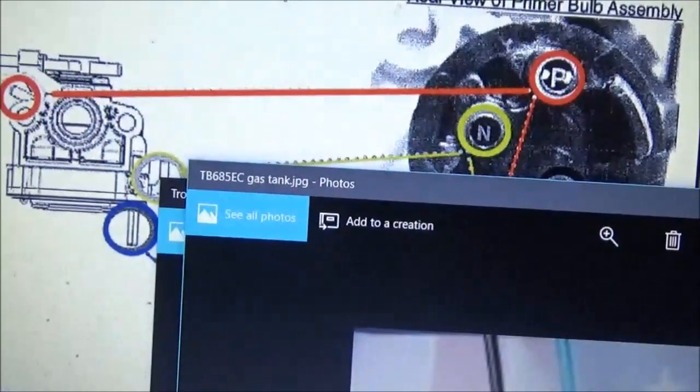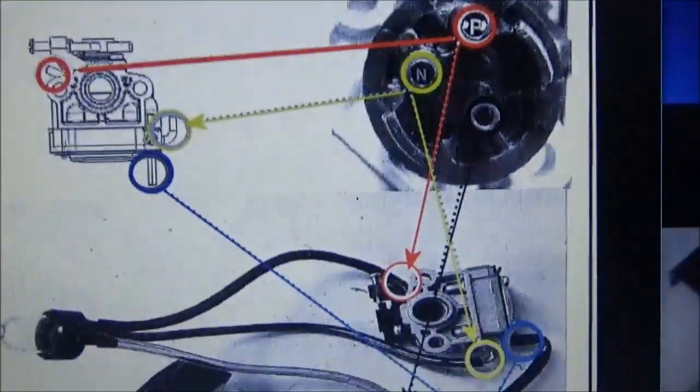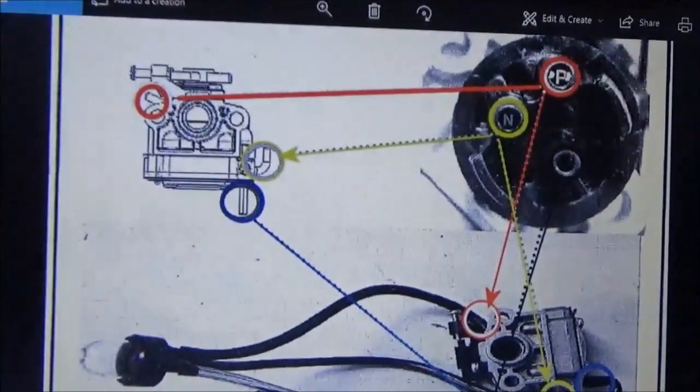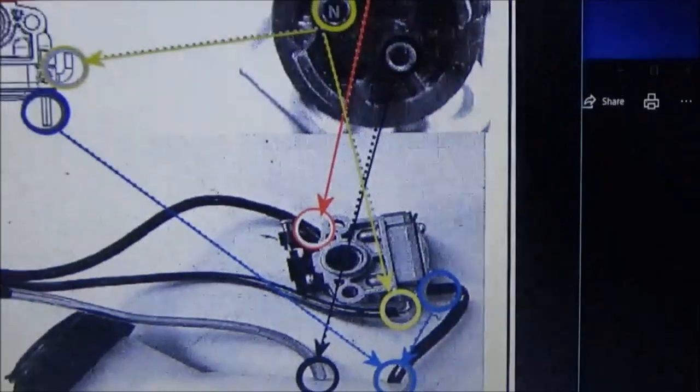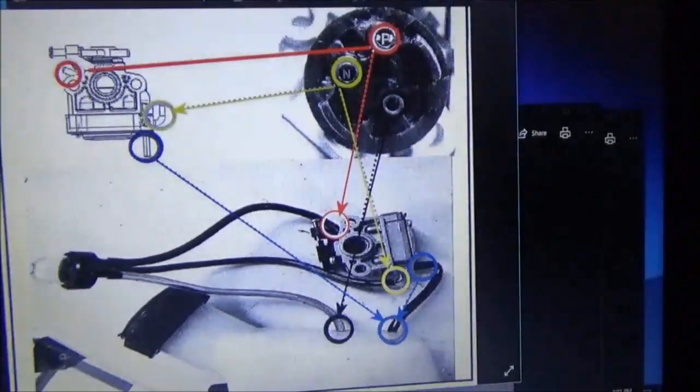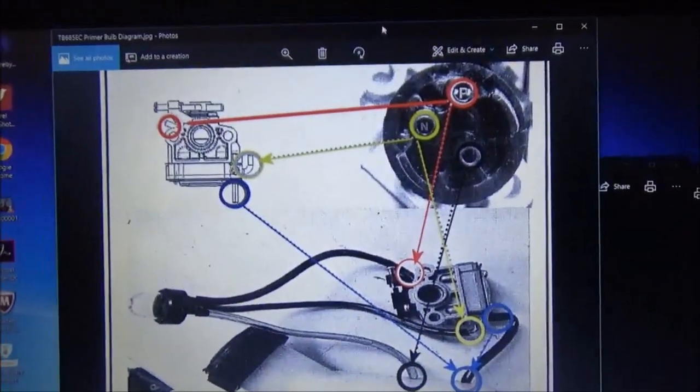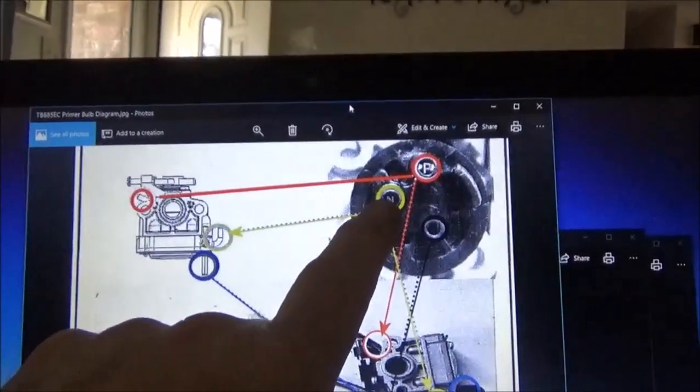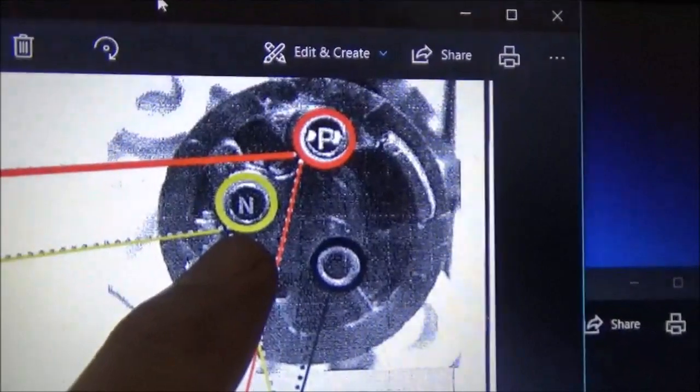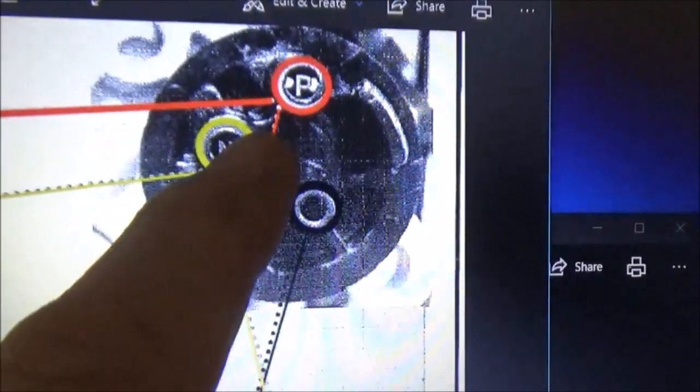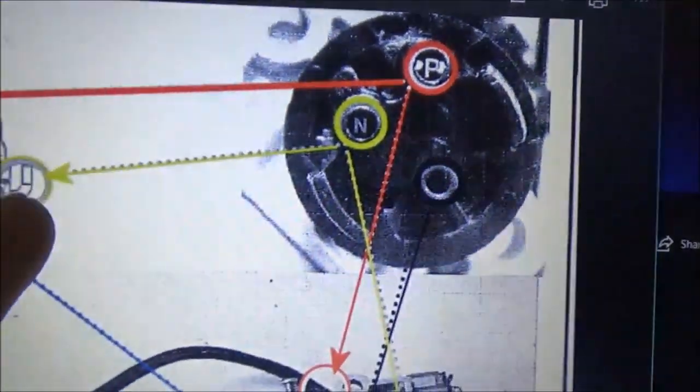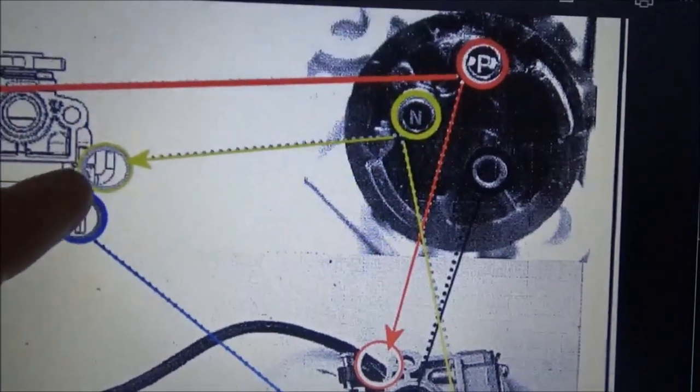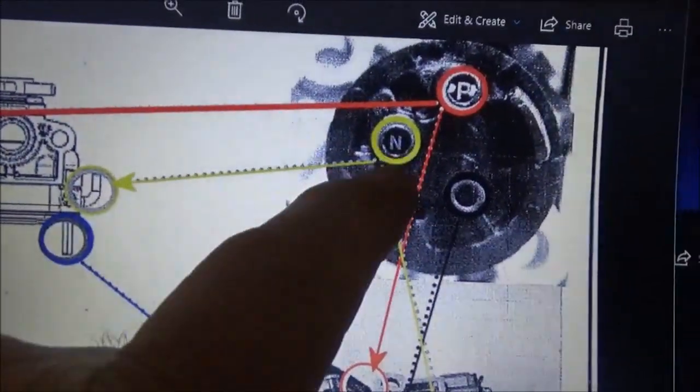Here's the diagram. I tried to print this out but I'm out of ink, so I wanted to show you. I don't know if you can see that or not. This is supposed to be the primer bulb. This has an IN on it. It goes from here to here. This is where it sucks the gas from the gas tank through that to the primer bulb.